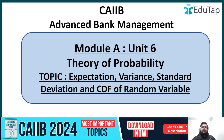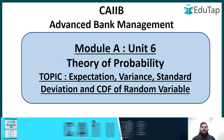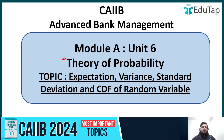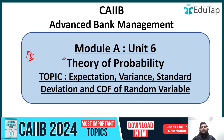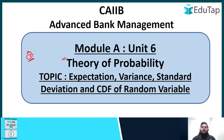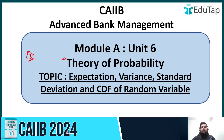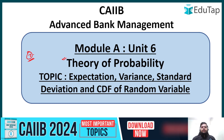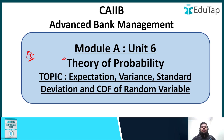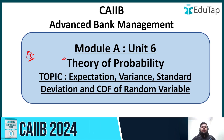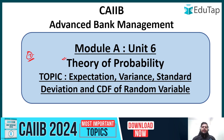Today we will target Unit 6, that is the theory of probability — the first part. In the last class on Day 7, we covered the basics: what probability means, the mathematical definition of probability, conditional probability, and the multiplication theorem.